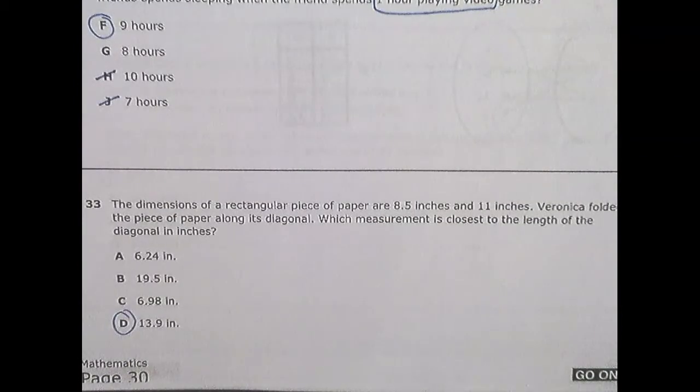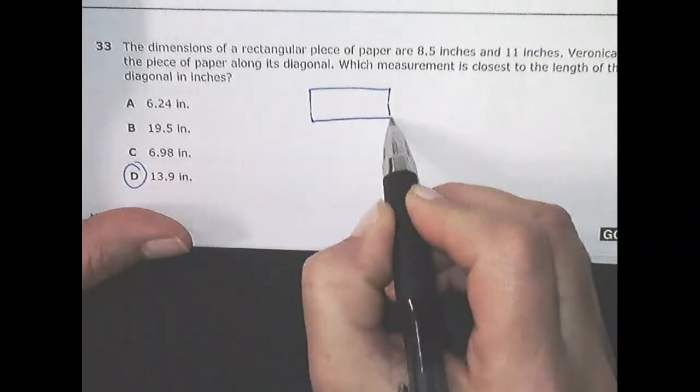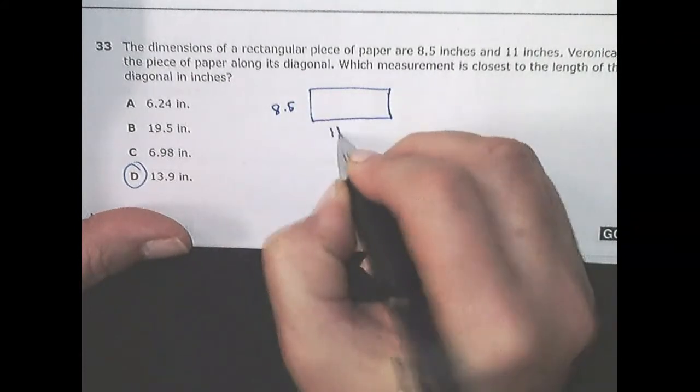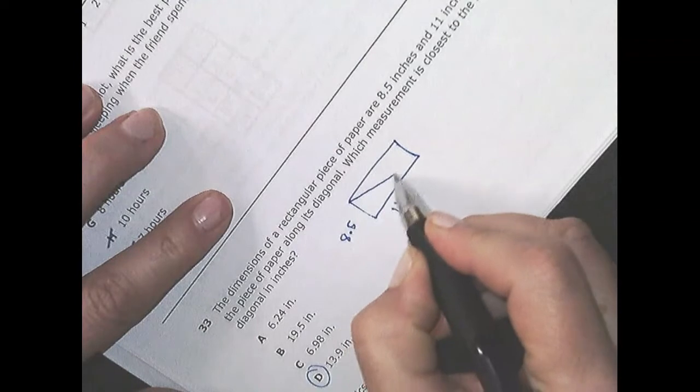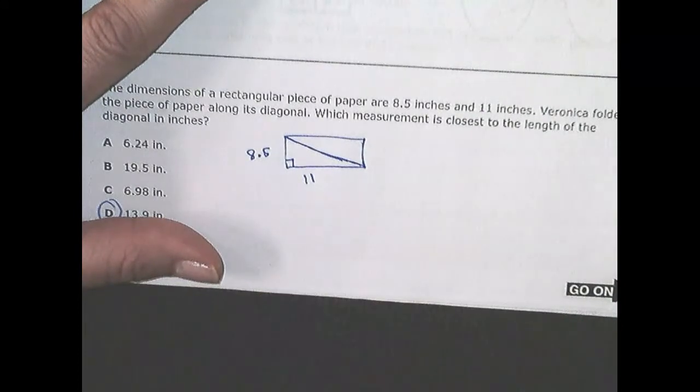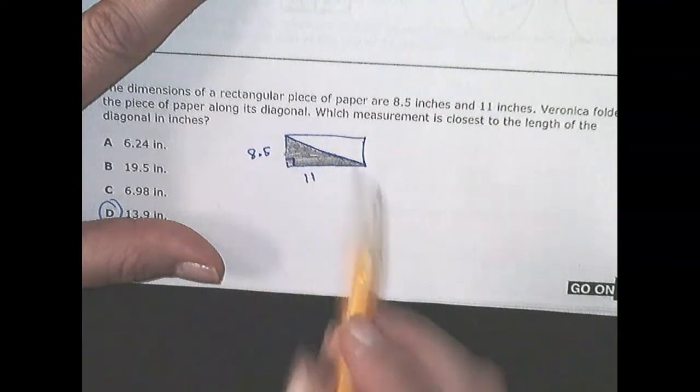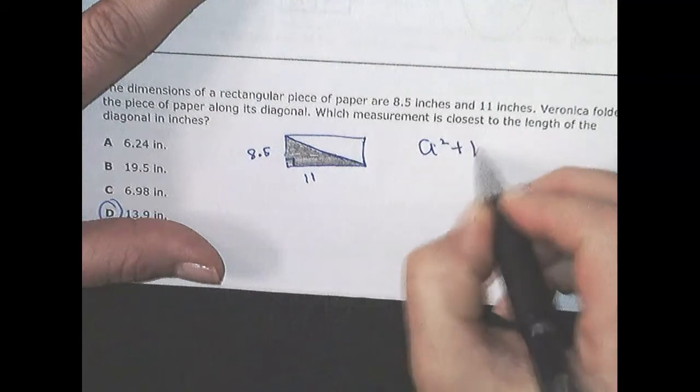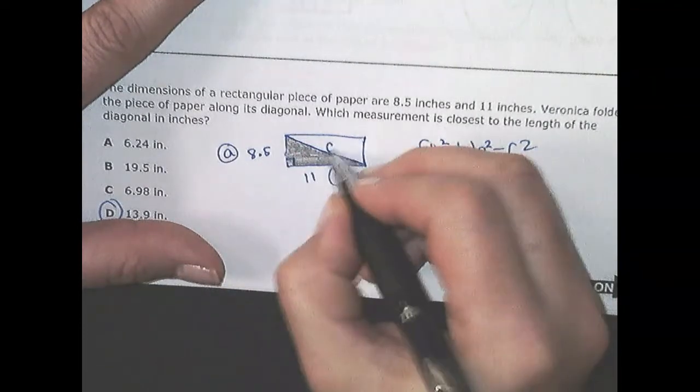The diameter of a rectangular piece of paper is this many inches. He folded it on the diagonal, which measure closest to the length of the diagonal in inches. You've got to know some key words. Here's the piece of paper. And it's eight and a half by eleven. Those are inches. Diagonal is catacorner. It's right here. And if you, would you agree that's a right angle? It would be if I drew it correctly. And if I shade this picture in, what shape did I end up making?